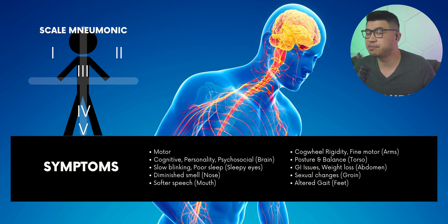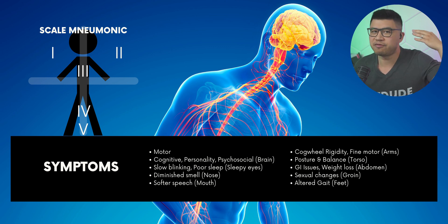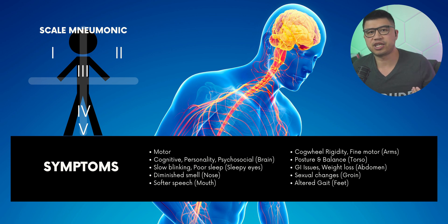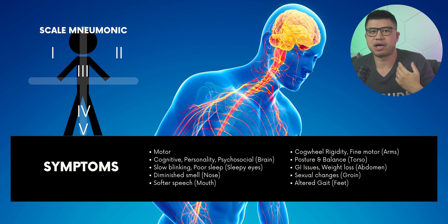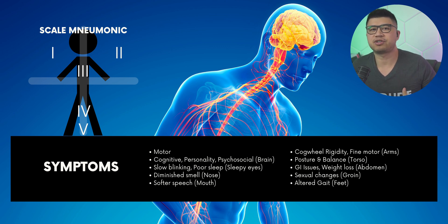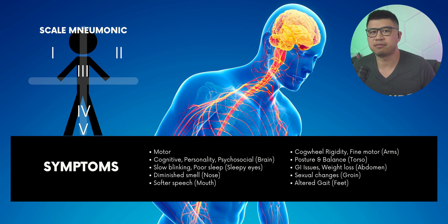Let's point out the other symptoms graphically on the body. The brain for cognitive and personality changes. The eyes for slow blinking, diminished movement, and poor sleep. The nose for loss of smell. The mouth for softer, affected speech. The arms for coordination, fine motor skills, and cogwheel rigidity. The chest for posture and balance. The abdomen for GI issues and weight loss. The groin for decreased libido, impotence, and personality changes such as hypersexuality. And the feet for altered gait, needing total assistance at stage 5.